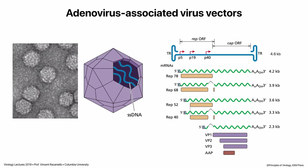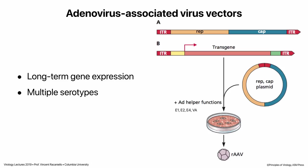Another very popular vector is adeno-associated virus, or AAV. These are small DNA viruses with a single-stranded genome and unusual hairpins at either end involved in DNA replication. They encode only two proteins: a Rep protein involved in DNA synthesis and the capsid protein. They are very popular for gene therapy because you get long-term gene expression — when you infect cells or animals with these viruses, gene expression remains for a very long time. There are also multiple serotypes, which is useful for repeat administration.